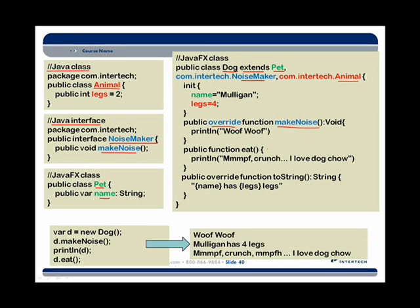To use this Dog class, or JavaFX Dog class, we simply call on the new keyword with our class name Dog to create an instance of Dog. Then we call on the various methods defined in Dog to print out what Dog is all about, or use the methods in Dog to actually perform some sort of functions.